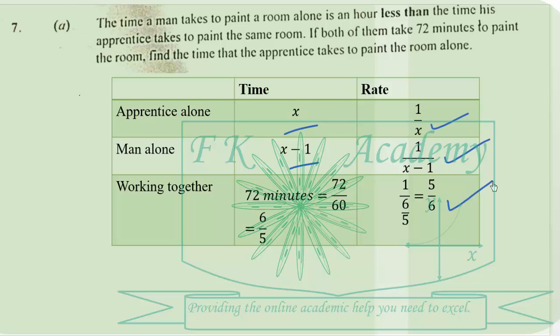When we put it together we get 5 over 6. So when we add the rate at which they are working together, 1 over x plus 1 over x minus 1, it should give us 5 over 6. So this is what we are going to solve.